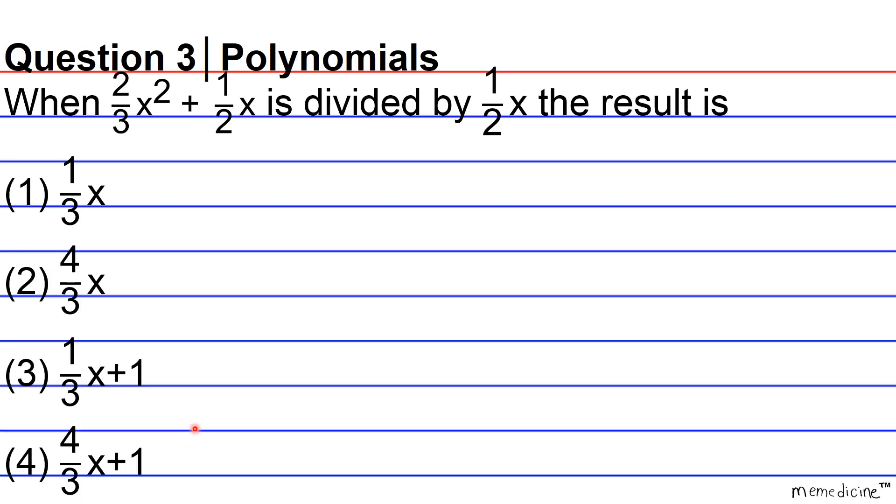All right, so when dividing a polynomial, in this particular case a binomial with two monomial terms, when you're dividing by a monomial, what you'll have to do is split the problem into two separate fractions with a common denominator.